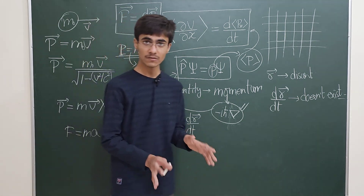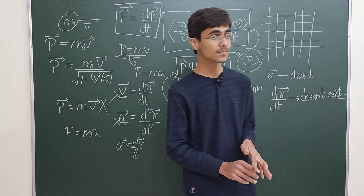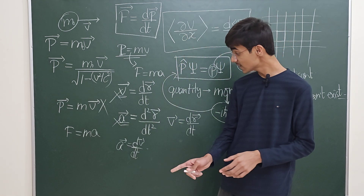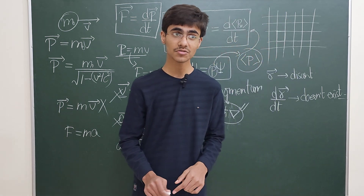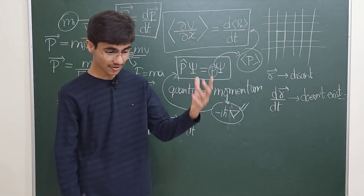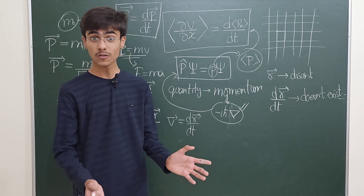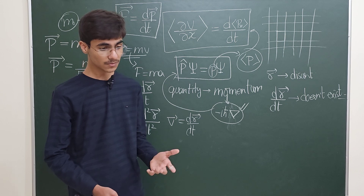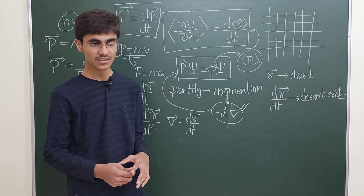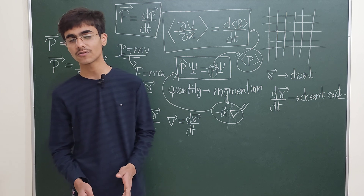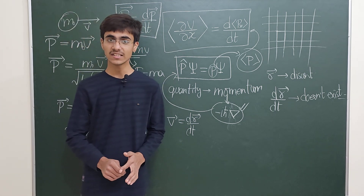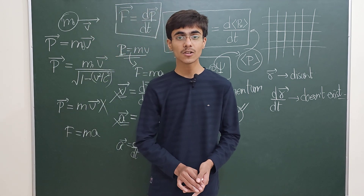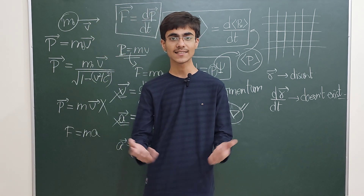That is why the concept of velocity doesn't exist in quantum mechanics, and why we talk of momentum instead. In fact, that is also why we don't talk of trajectories — you cannot describe the trajectory of an electron orbiting a nucleus, because you can only find the probability of finding the electron in different places. That was all for today's video — thanks for watching.